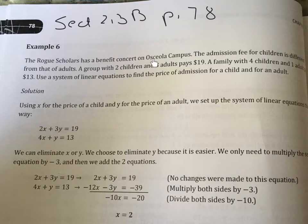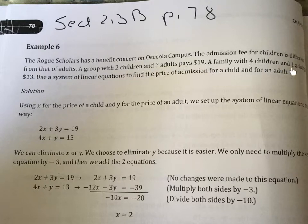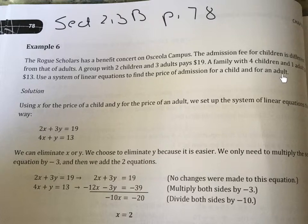Example six, page 78. The Rogue Scholars has a benefit concert on Oscila campus. The admission fee for children is different from that of adults. A group of two children and three adults pays $19. A family with four children and one adult pays $13. Use a system of linear equations to find the price of admission for a child and for an adult. The first thing we need to do is write the equations.